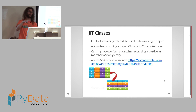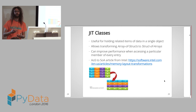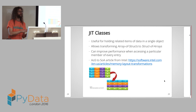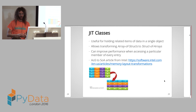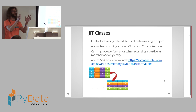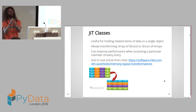One thing you can use JIT classes for is like a struct in C. An interesting use is to make a transformation from an array-of-structs layout to a structs-of-arrays layout. This can increase performance if your code iterates over a particular member of every entry in an array of structures, because it's a more efficient way to access all those members. The transformation transposes the layout so all the same members of each object are next to each other in memory.